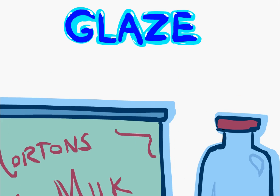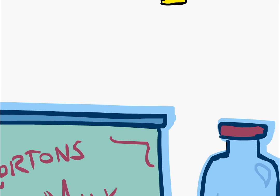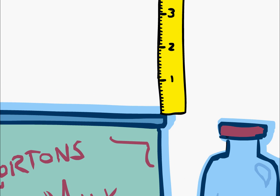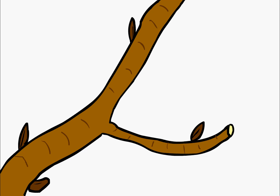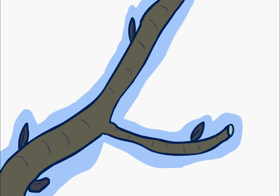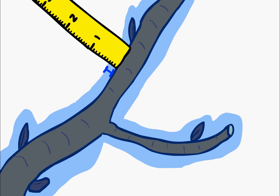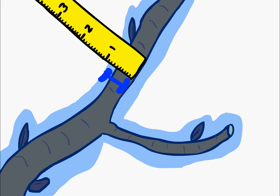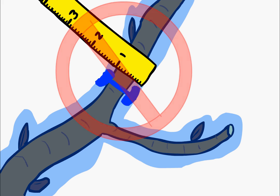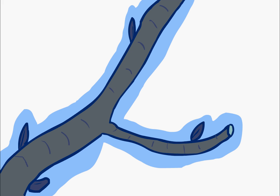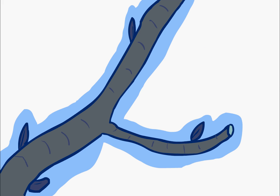Ice covering objects is also called a glaze. It can be measured on a flat surface with a ruler, preferably with increments of tenths of an inch. You can also measure ice accretion on branches — just make sure to measure the radius of the ice, not the whole diameter. Because ice rarely accumulates uniformly, it's helpful to take multiple measurements and calculate an average.